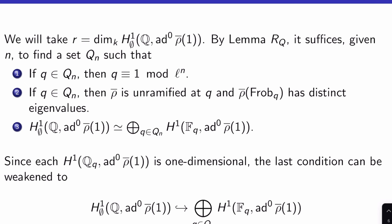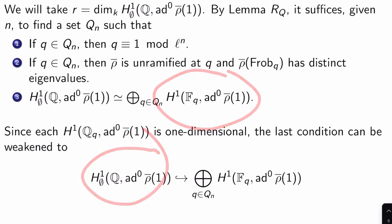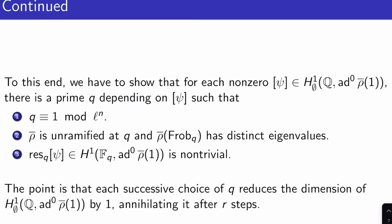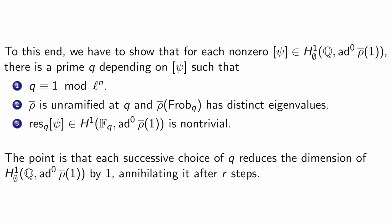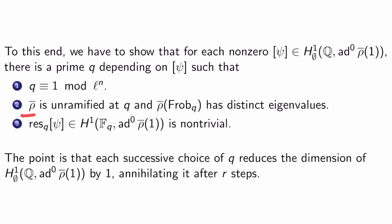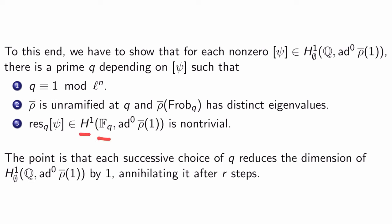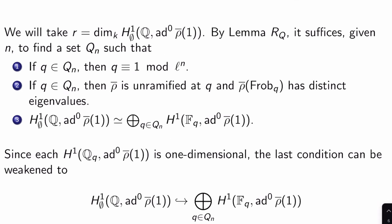Since each H^1(Q_q, ad^0 rho-bar(1)) is one-dimensional, which we proved already, the last condition can actually be weakened to just requiring an injection from the empty-set cohomology group into the direct sum. So we just have to find, for each non-zero cohomology class [psi] in H^1(∅, ad^0 rho-bar(1)), a prime q depending on that class such that: q ≡ 1 mod L^N, rho-bar is unramified at q, rho-bar(Frobenius_q) has distinct eigenvalues, and the restriction of [psi] to H^1_f(Q_q, ad^0 rho-bar(1)) is non-trivial. Each successive choice of q reduces the dimension of H^1(∅, ad^0 rho-bar(1)) by 1 and annihilates it after R steps.